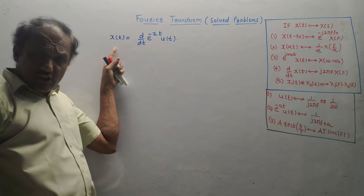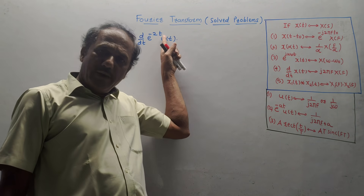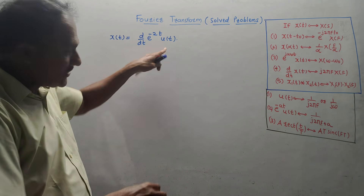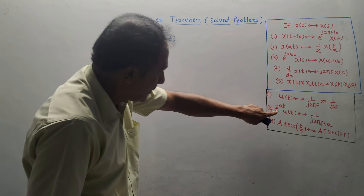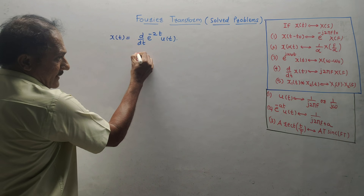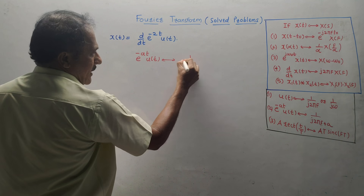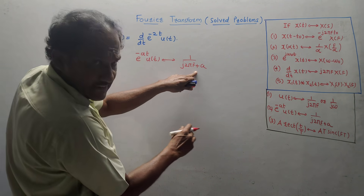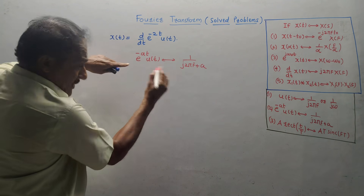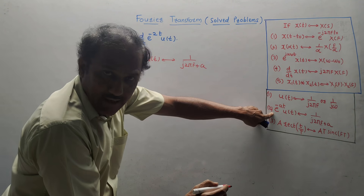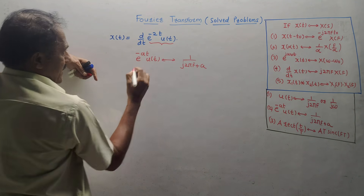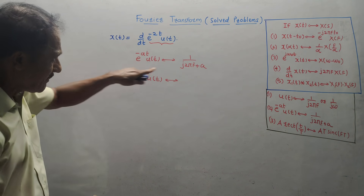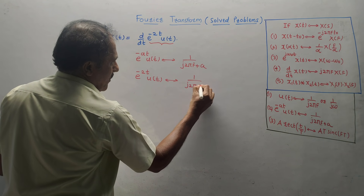Next problem: calculate the Fourier transform of x(T) = d/dt of [e^(−2T)·u(T)]. First, identify the basic signal: the standard formula is e^(−aT)·u(T) with Fourier 1/(J2πF + a). Using this formula with a = 2: e^(−2T)·u(T) has Fourier 1/(J2πF + 2). Now we need d/dt of this term, so we use a property.